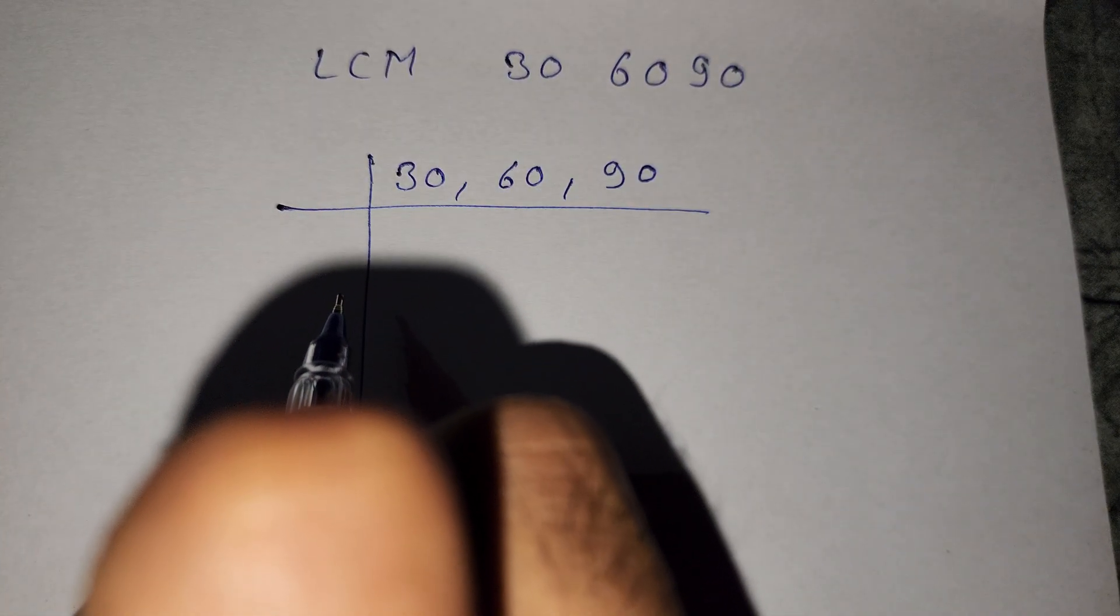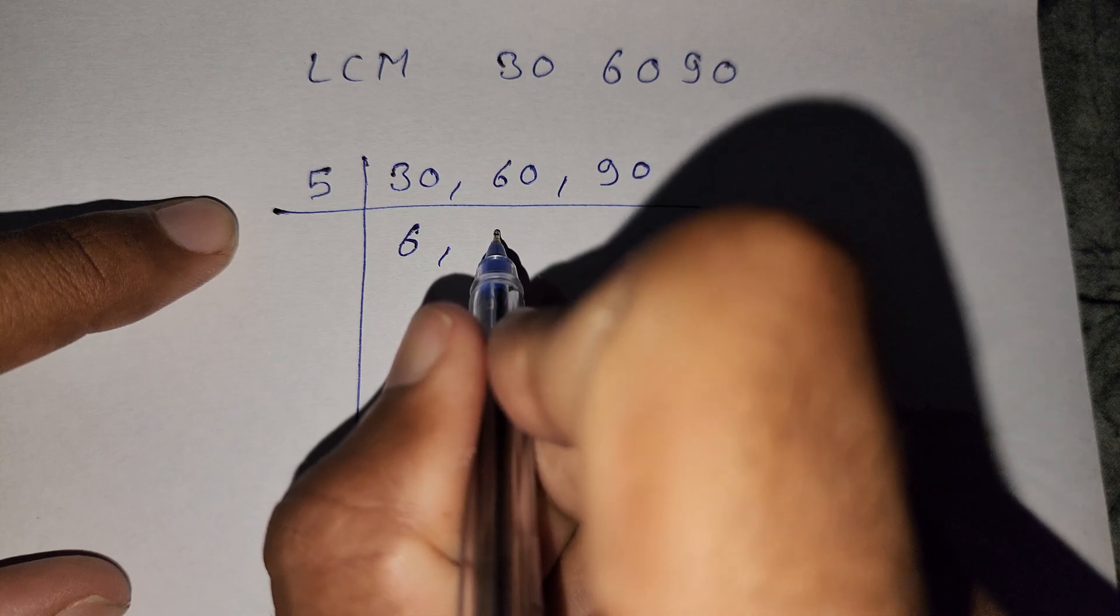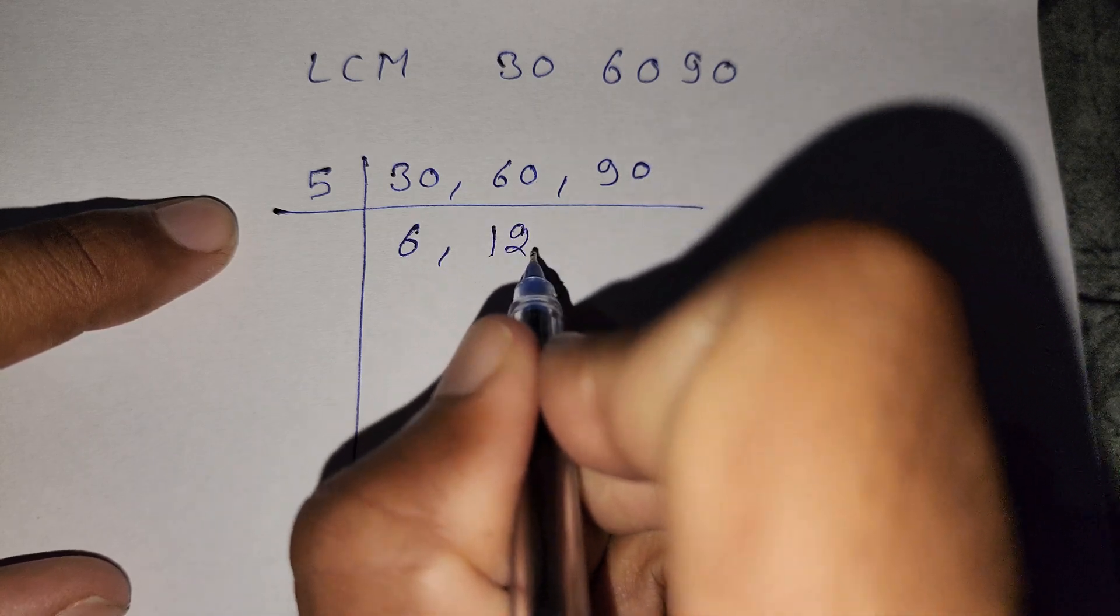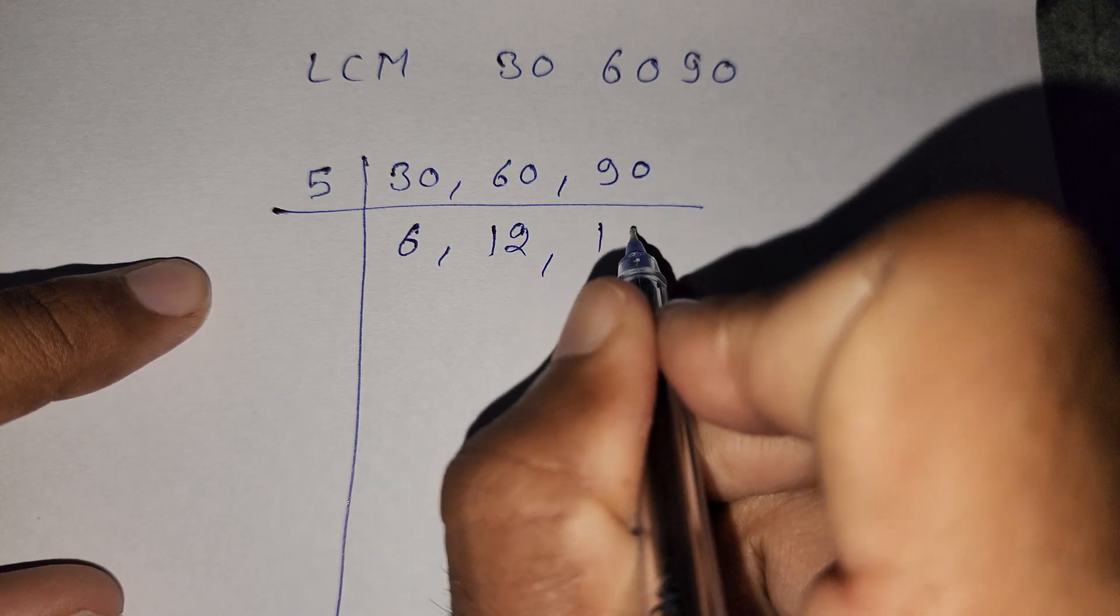So first divide by 5. 5 times 6 is 30, 5 times 1 is 5, and 5 times 2 is 10. Here is 1 and 18.